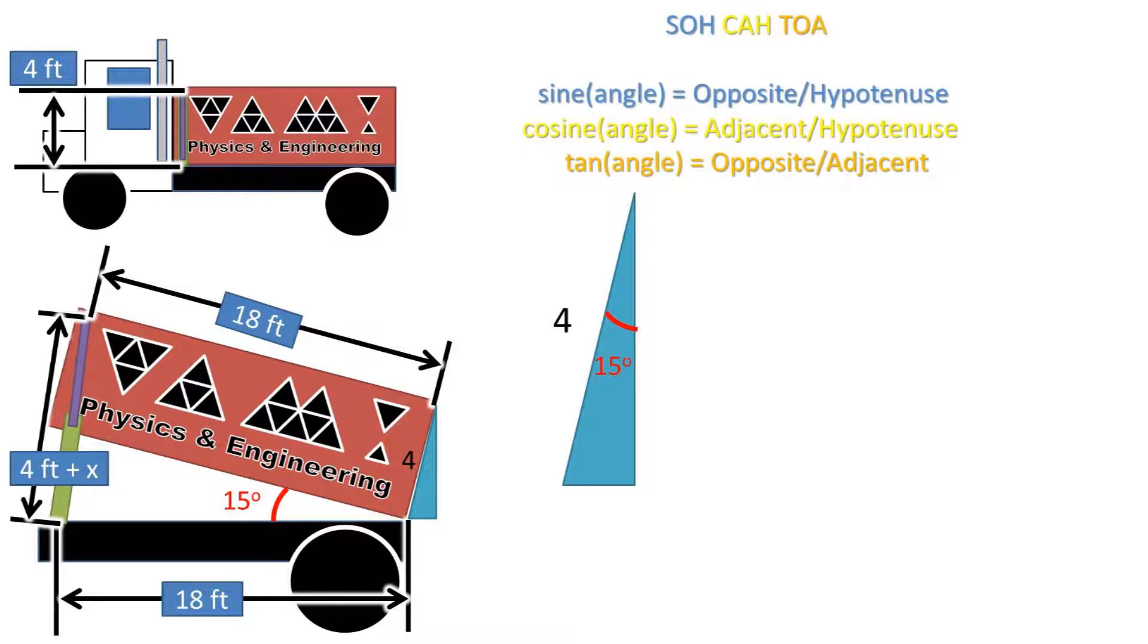We can then use the property of right triangles, or triangles with one 90 degree angle, SOHCAHTOA. We are given the hypotenuse and are solving for the adjacent leg and opposite leg. So we will be using the sine of the angle equals the opposite side of that angle over the hypotenuse, or longest side.